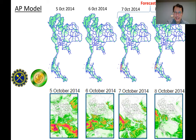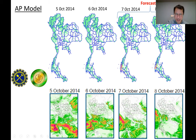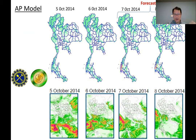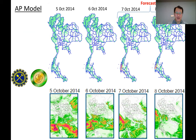Using that method, we still call this an indirect method, because we are not measuring the movement of the land itself, but trying to correlate the rainfall amount with the landslide. That's still called the indirect warning.